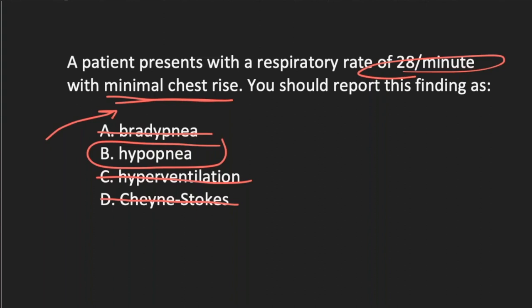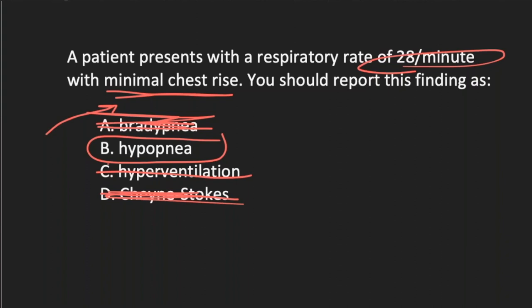If you say you don't know what hypopnea is, slow breathing is out, and Cheyne-Stokes is out. Now I've eliminated two of them, and hyperventilation is rapid and deep — so that's out too. You don't see a lot of hypopnea, but you can also see hyperpnea.